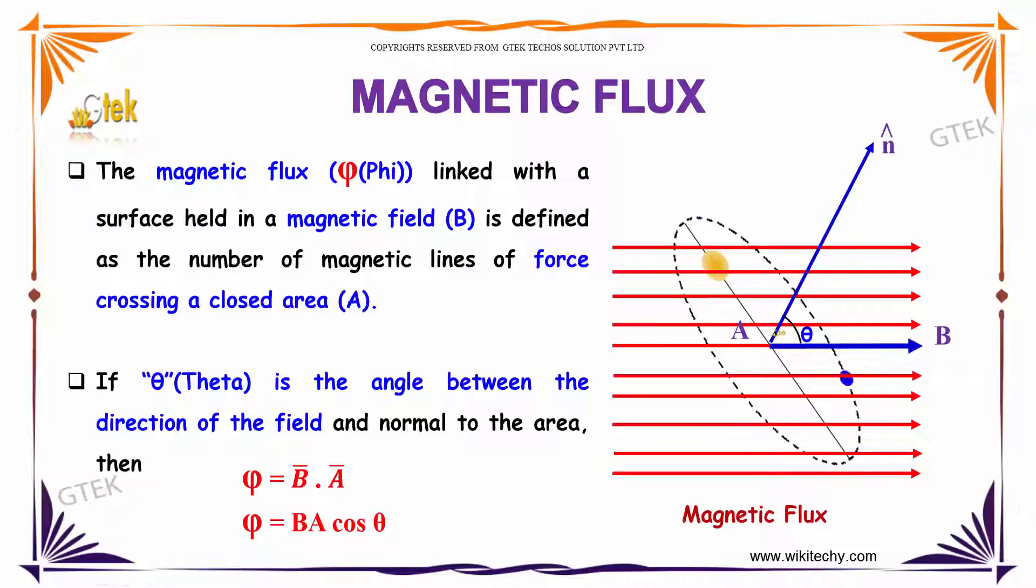If theta is the angle between the direction of the field and normal to the area, then phi is equal to B vector dot A vector, which is given by the formula phi equals BA cos theta. This is referred to as magnetic flux.